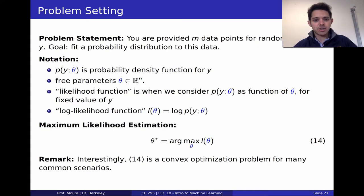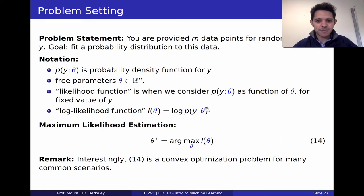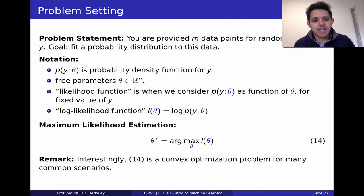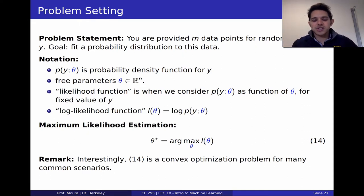Let's define the notion of a likelihood function. A likelihood function is when we consider p of y semicolon theta as a function of theta for a fixed value y. The log likelihood function is the log of the PDF as a function of theta for a given value of y — essentially, how likely is this parameter vector theta given this data y? Because probabilities can be quite small and vary by orders of magnitude, it's useful to take the log.